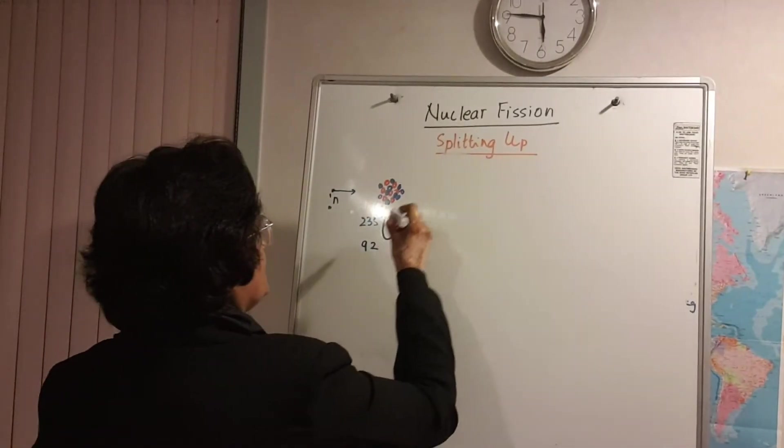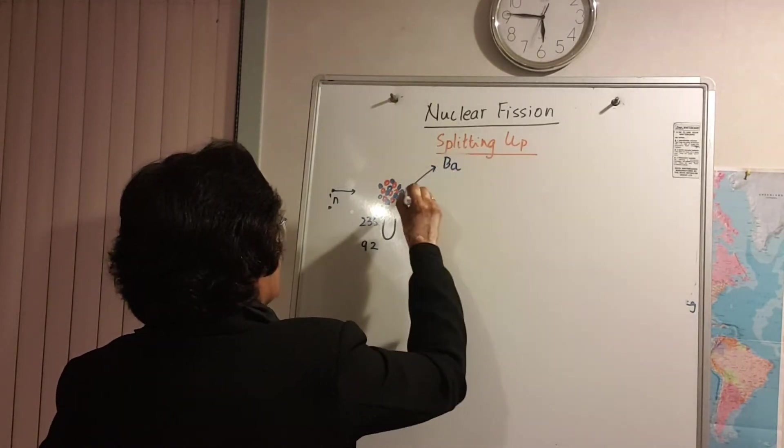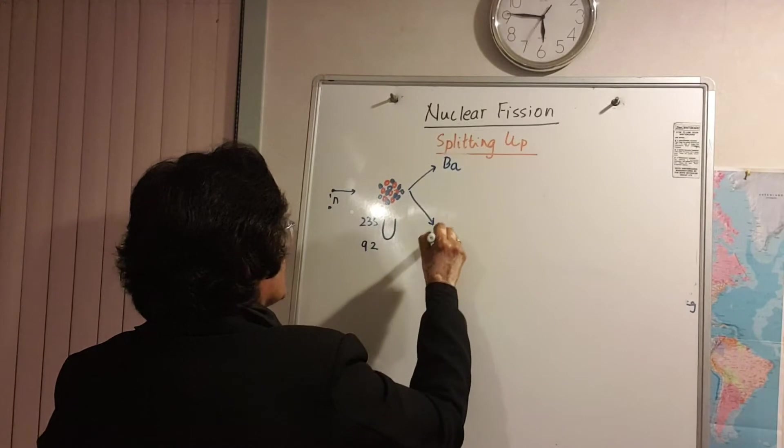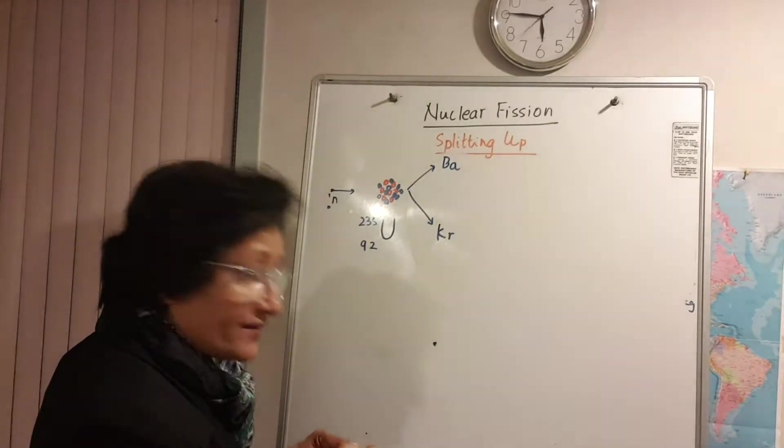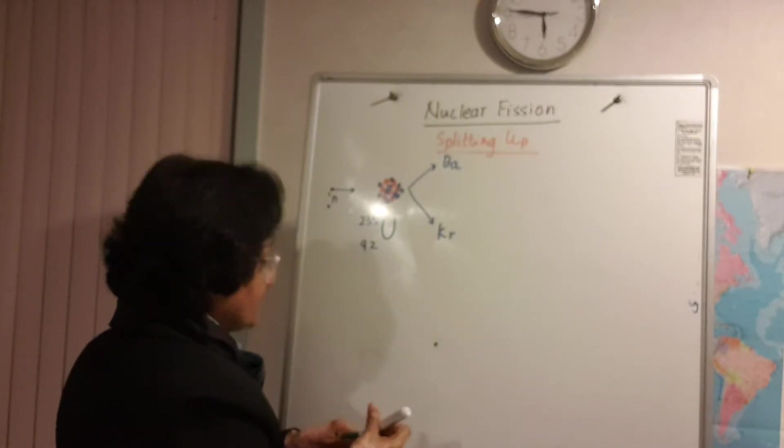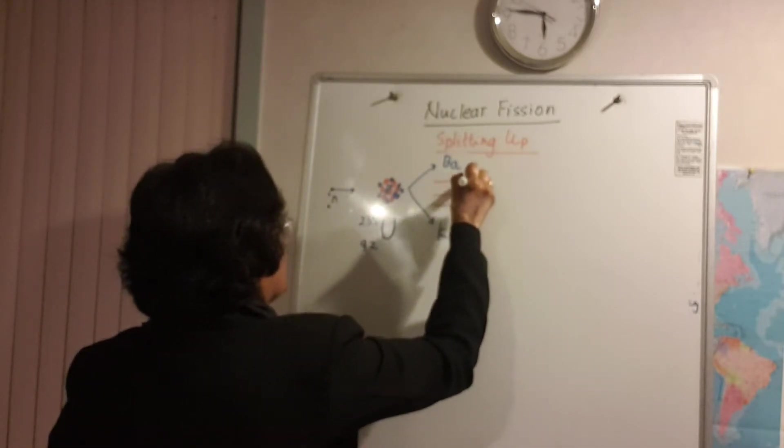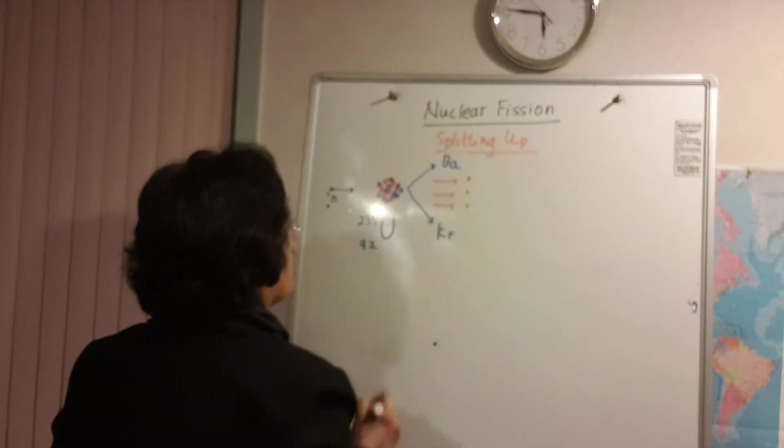So what happens is this uranium splits into two medium-sized nuclei, for example barium and krypton, and then in addition to this it gives out, it could be two, it could be three, let's say three neutrons.